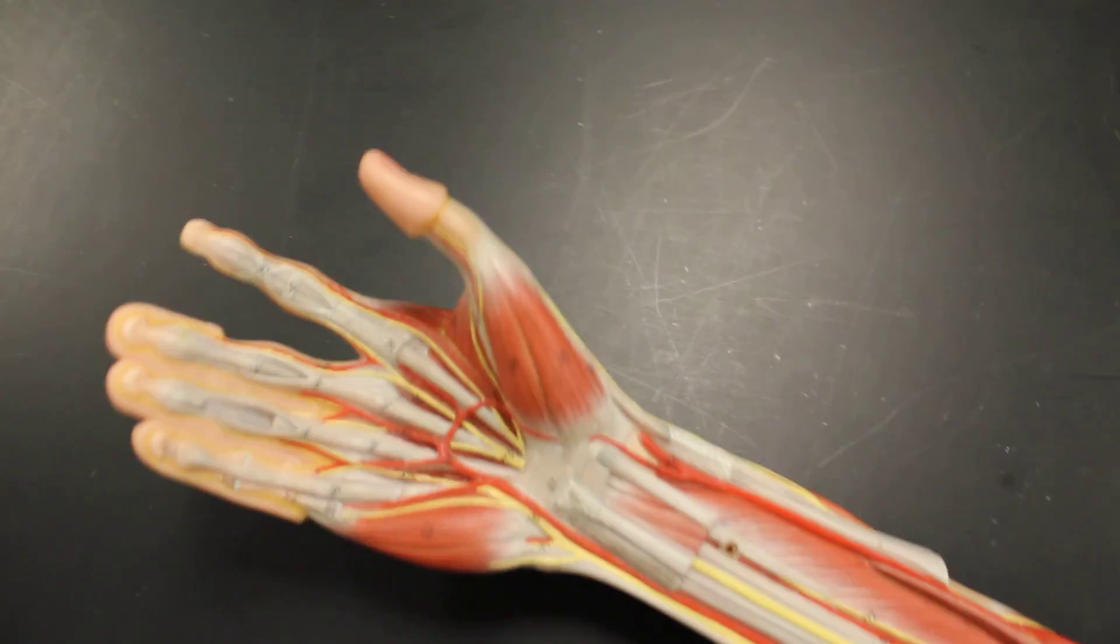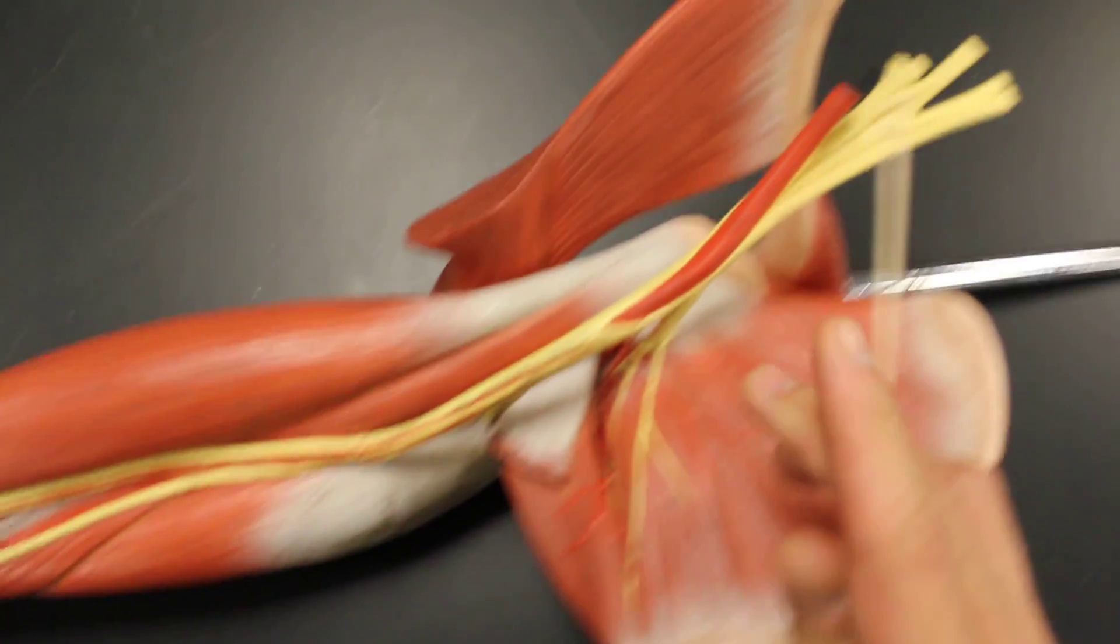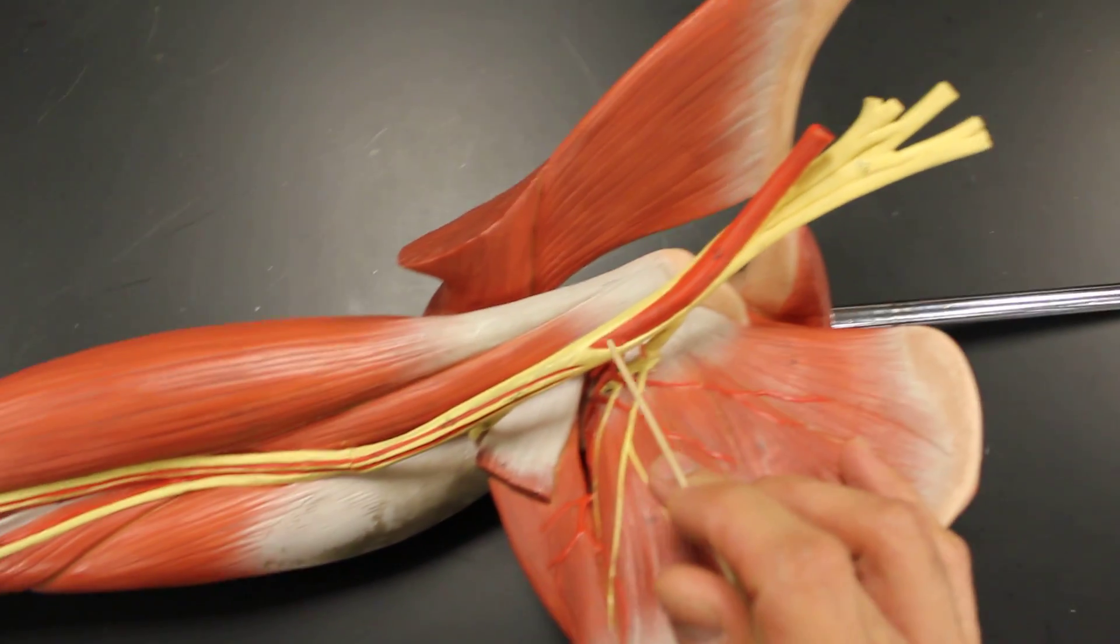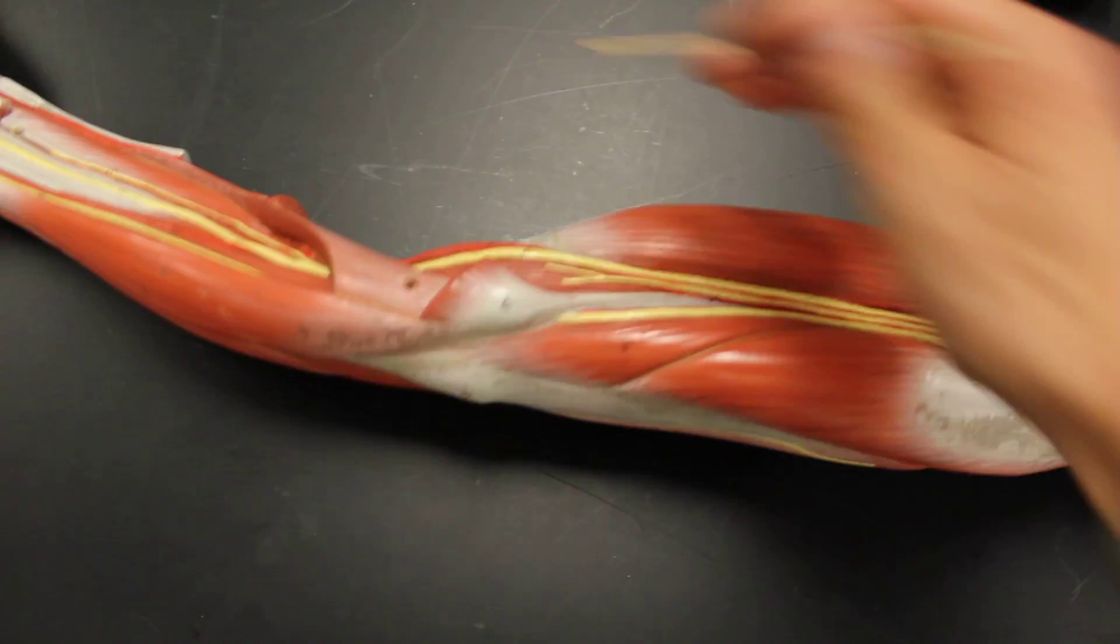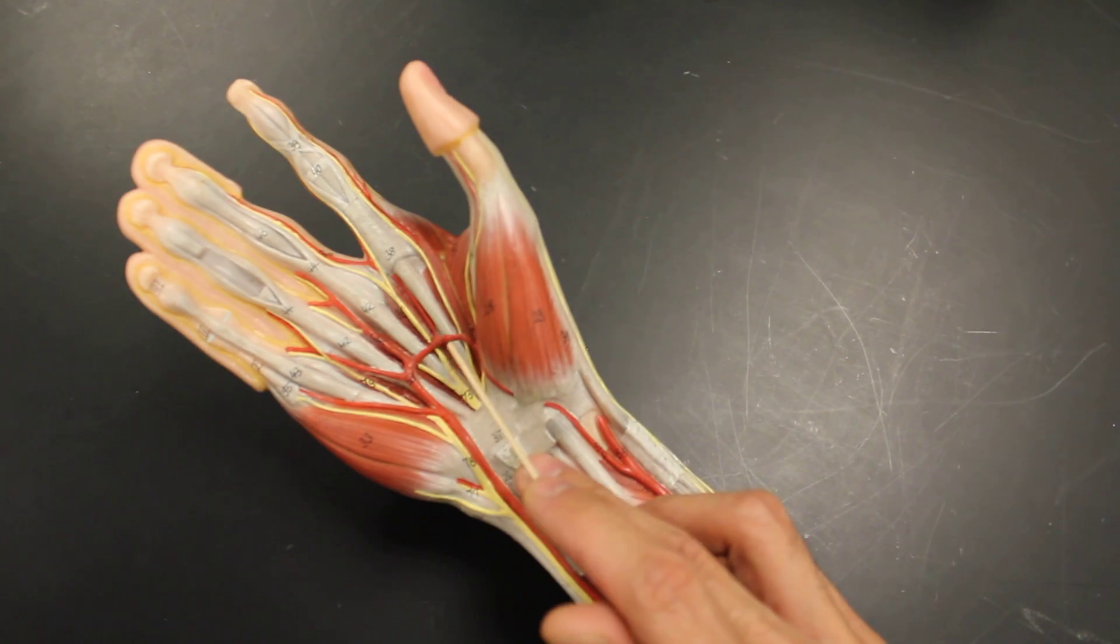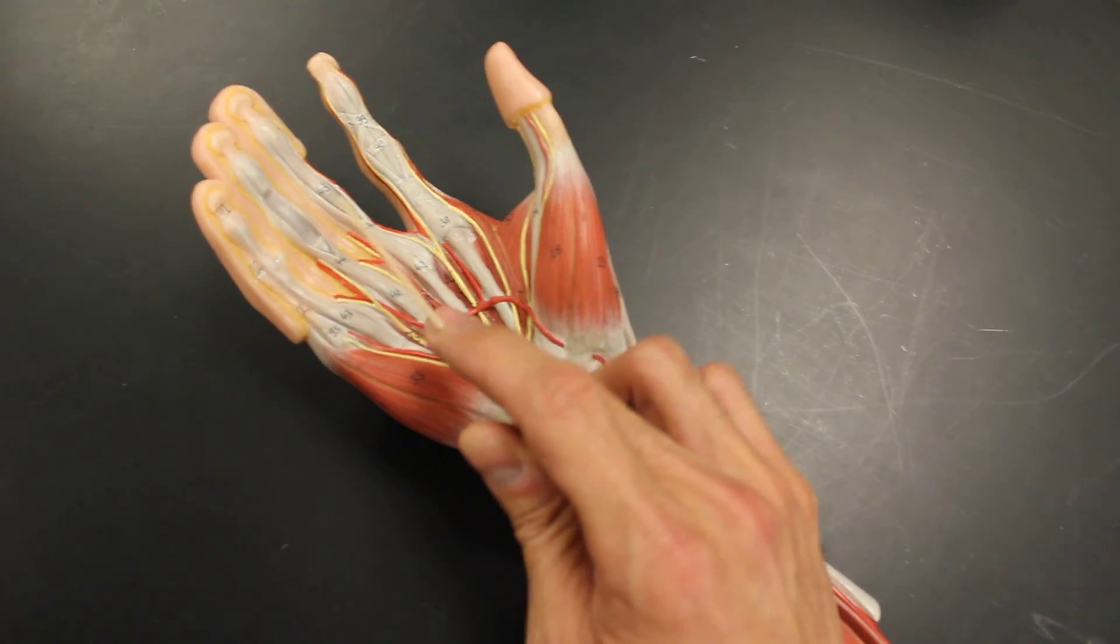And so that's the upper extremity. Let's quickly review again. This is the subclavian, to the axillary, to the brachial, to the radial and ulnar, to the superficial and deep palmar arches, to the common and then to the proper digital. That's the upper extremity.